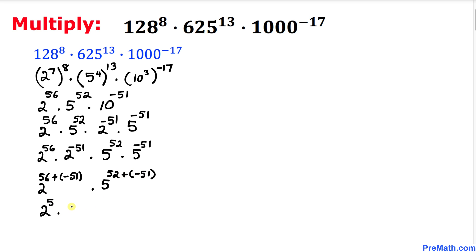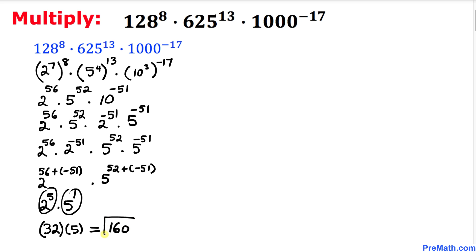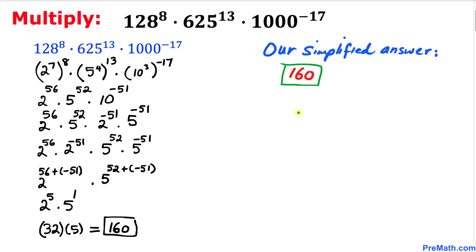Now, 2 power 5 is 32, and 5 power 1 is simply 5. Multiplying them: 32 times 5 equals 160, which is our final answer. Thanks for watching — please don't forget to subscribe to my channel for more exciting videos. Bye!